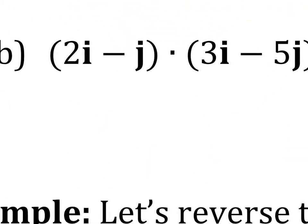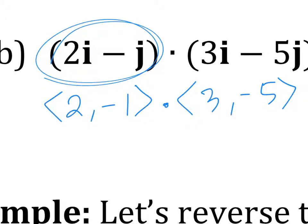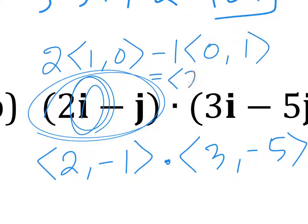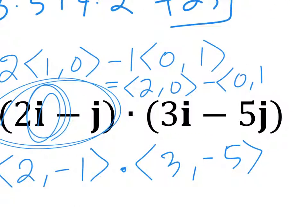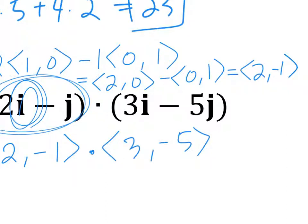Next: 2i minus j dot 3i minus 5j. The vector form of 2i minus j is 2, negative 1. So it becomes 2, negative 1 dot 3, negative 5. Basically, 2i is just 2 and minus j is just minus 1. The answer is 1.